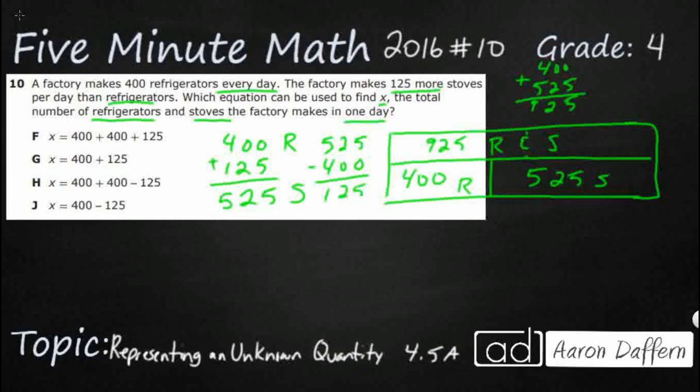But here's the interesting thing about this question. We're not looking for 925. That helps us, but we're looking for X. So X is our unknown. And in this case, X is going to equal this 925 that we are looking for.